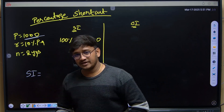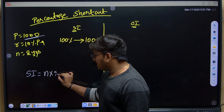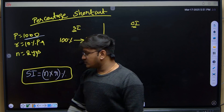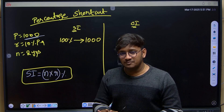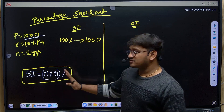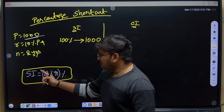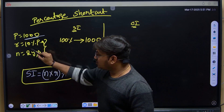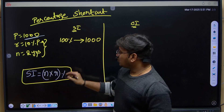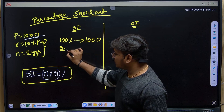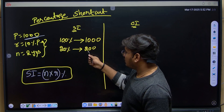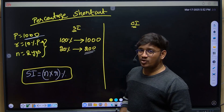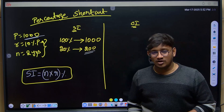For simple interest using the percentage shortcut, remember: Simple Interest = N × R%. Here, N = 2 and R = 10, so N × R = 20. Therefore simple interest = 20%. If 100% is ₹1000, then 20% is ₹200. That's it — simple interest is ₹200. Even using PTR/100 you get the same answer. This is a fast way to get the answer directly.